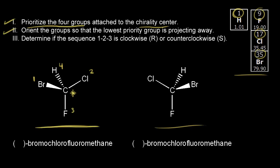Step two: orient the groups so that the lowest priority group is projecting away from you. Our lowest priority group is hydrogen, and it's already going away from us — the hydrogen is on a dash. So step two is pretty much done.